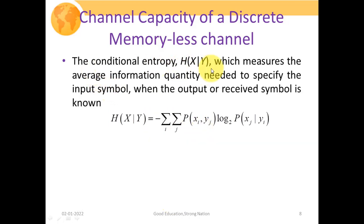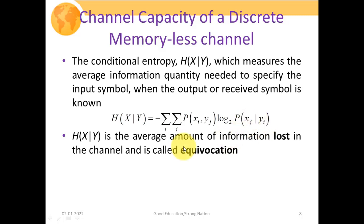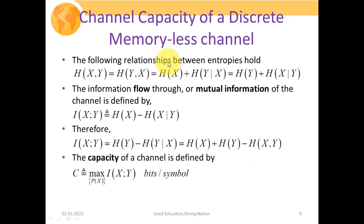The conditional entropy H(X|Y) is the average information content of X given that symbol Y has been received. It measures the average information needed to specify the input symbol when the output symbol is known: H(X|Y) = −∑_i ∑_j P(Xi, Yj) log₂ P(Xi | Yj). This H(X|Y) represents the average amount of information lost in the channel and is called equivocation. We must reduce this lost information to achieve better signal reception.